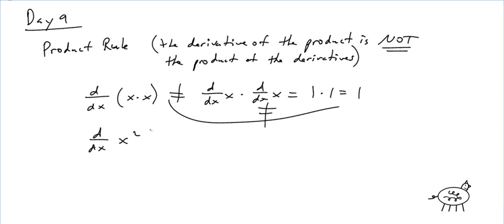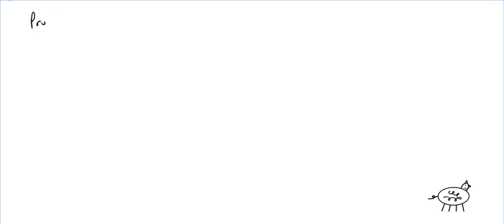Think about it: d/dx of x squared — isn't that 2x? So let's actually come up with the derivative. Let's write this out. Product rule.